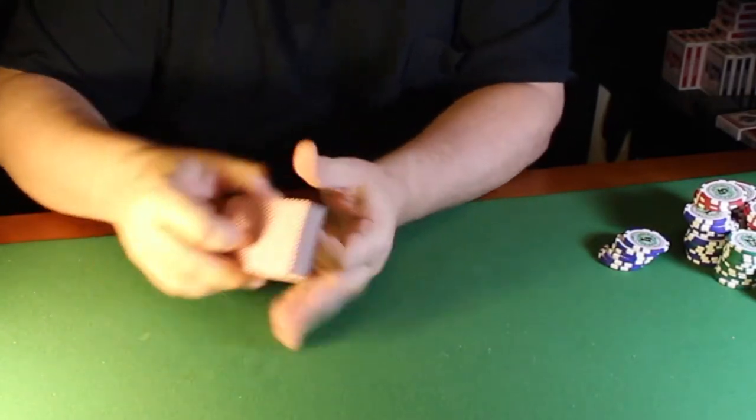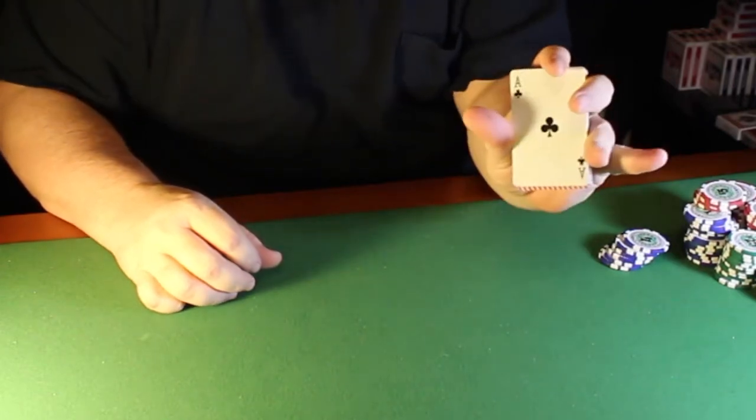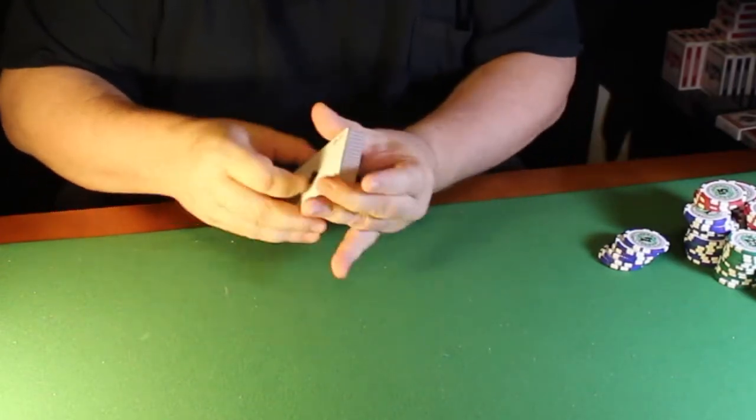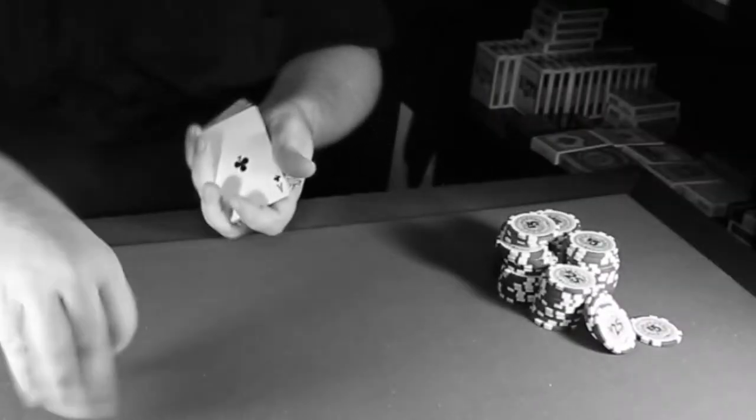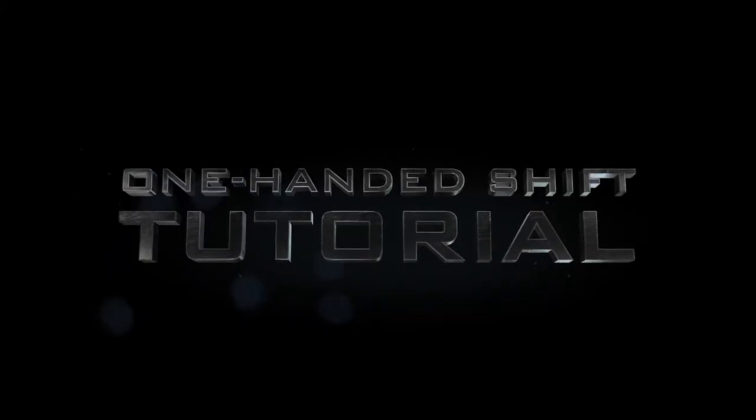And we will cut those into the center of the deck, and in just a split second they are shifted back to the top. You reach over to ante, and now your slug is on top. Welcome to the one-handed shift.